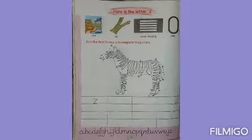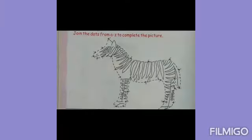Now let's do this worksheet. First, in this worksheet we have to join the dots of this zebra from letter A to Z. And here we will write small letter Z with the help of sleeping lines and slanting lines.